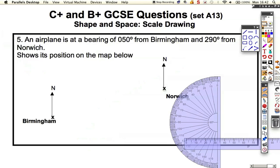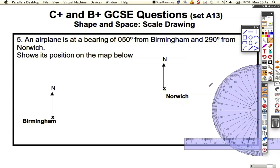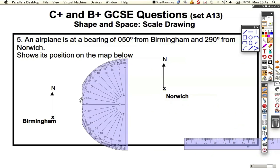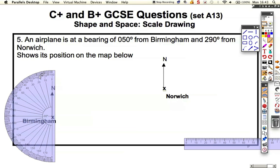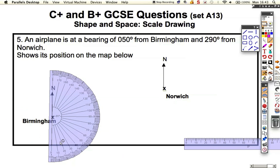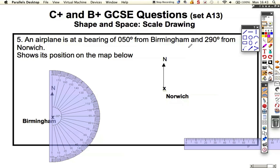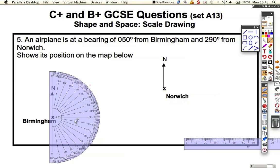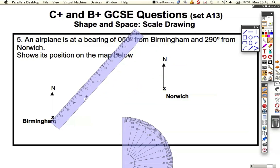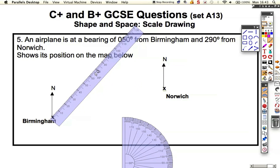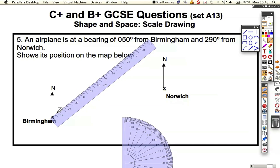If we go one question on, this one's a very common exam question. You've got an aeroplane which is on a bearing from one place and a different bearing from the other, and you want to find out where that is. From Birmingham it's on a bearing of 050. Let's get north straight up. Then we want to measure a bearing of 050, so go around the outside. 50 degrees is just there, so I know it's somewhere along that line. If I get my ruler, place it just there, line it up, and draw a line all the way along. I don't know where it is, so I'm going to draw it as long as possible.